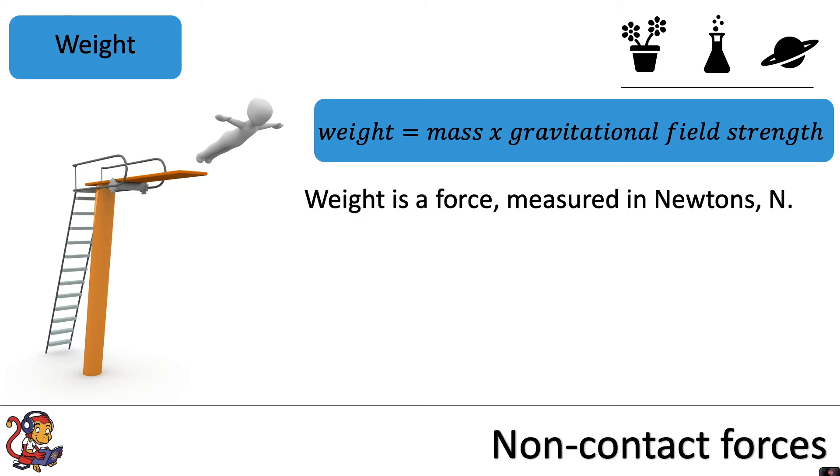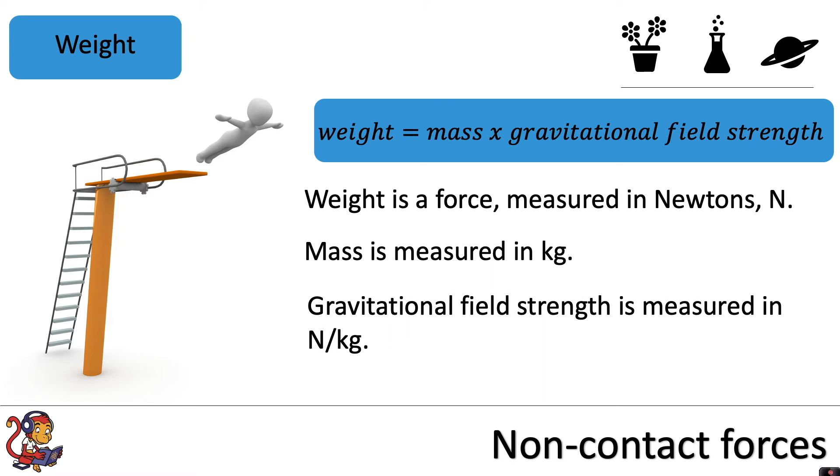Weight is a force measured in newtons. Mass is measured in kilograms. And gravitational field strength is measured in newtons per kilogram. So in physics, when you're talking about weight, you're not talking about what your mass is in kilograms, you're talking about the force with which you're pulled down towards another object.